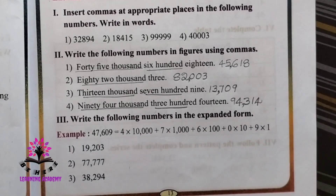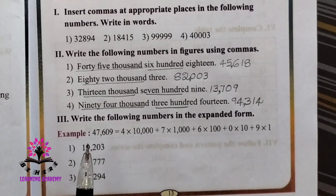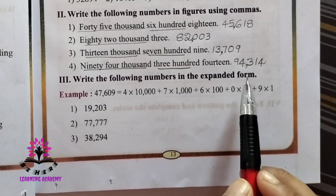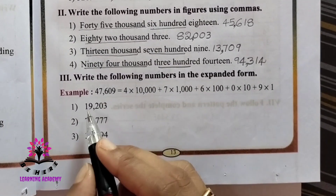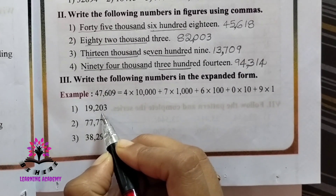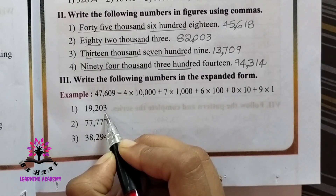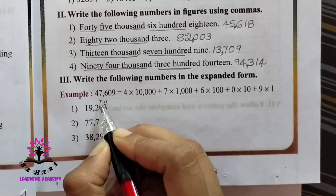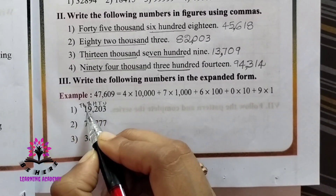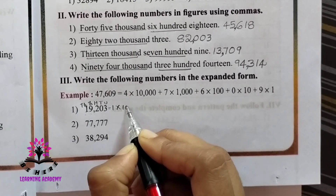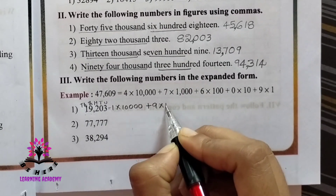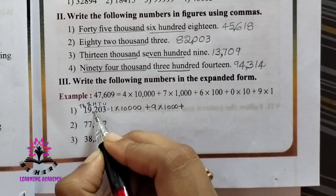Now, write the following numbers in expanded form. The first example is already done. The next question is 19,203. First mark the places: unit, ten, hundred, thousand, ten thousand. So this will be 1 × 10,000 + 9 × 1,000 + 2 × 100 + 0 × 10 + 3 × 1.